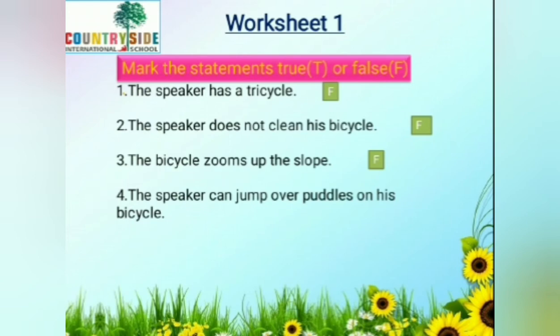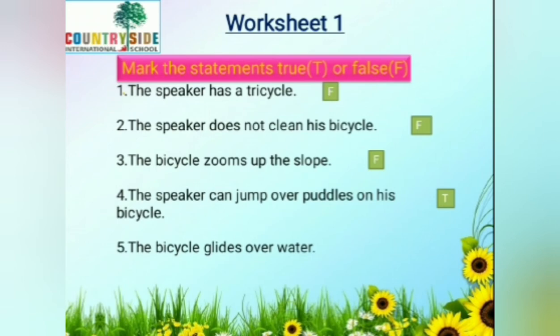Fourth: the speaker can jump over puddles on his bicycle. This is true — remember the line in the poem: 'It jumps over puddles.' Number five: the bicycle glides over water. What does it glide over? It glides over stone. But here they have given water, which is false.